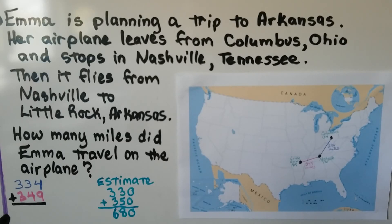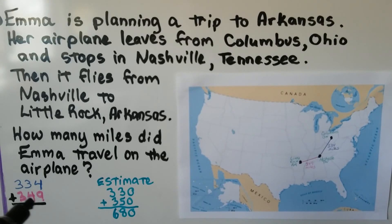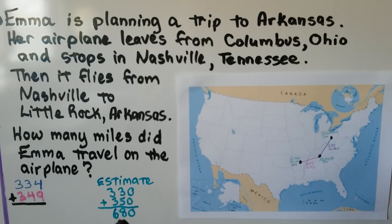We can round to the nearest tens place and make an estimate. For 334, the four tells the three in the tens place to stay the same, so it rounds to 330. For 349, the nine tells the four to go up one to a five, so it rounds to 350. Adding 330 plus 350: zero plus zero is zero, five plus three is eight, three plus three is six. We have an estimate of about 680 miles.